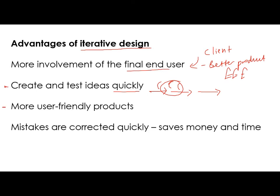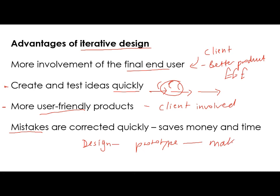This point links to the first: you get more user-friendly products because the client has been so heavily involved. And also, any mistakes are corrected quickly. So you don't, for example, have your design, prototype it, make it, and then suddenly find there's an issue and you have unhappy clients after you've already invested and made this product. With the iterative design process, because you've had your client involved, they are going to be happier because you're going to spot any mistakes before they go into production.